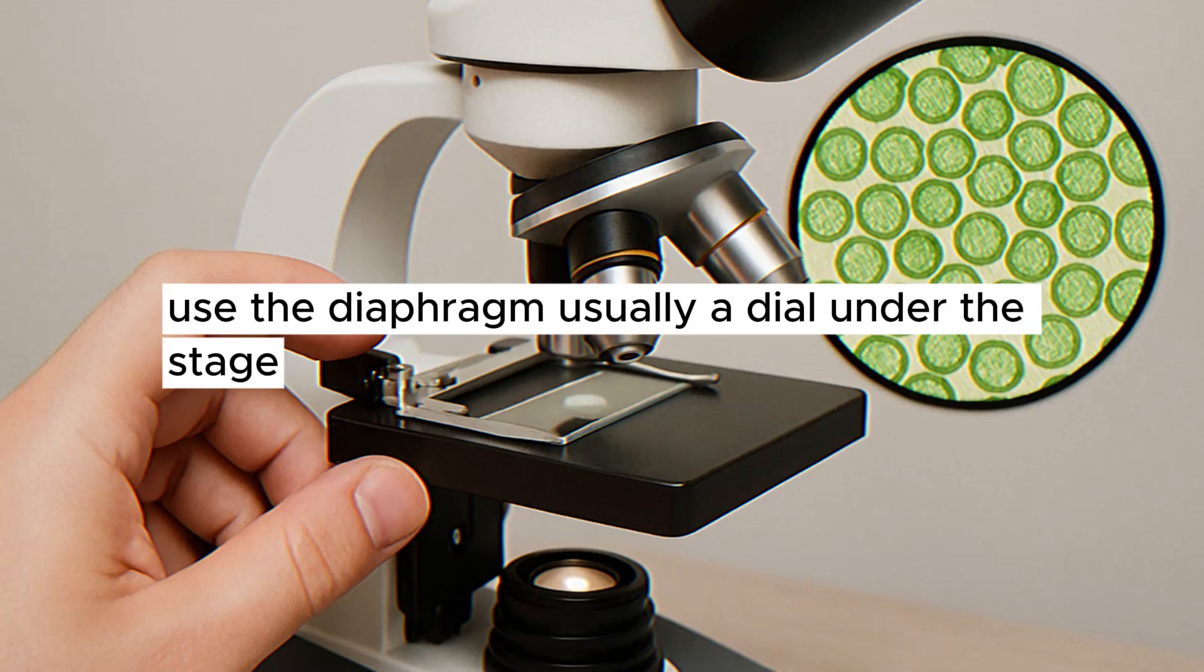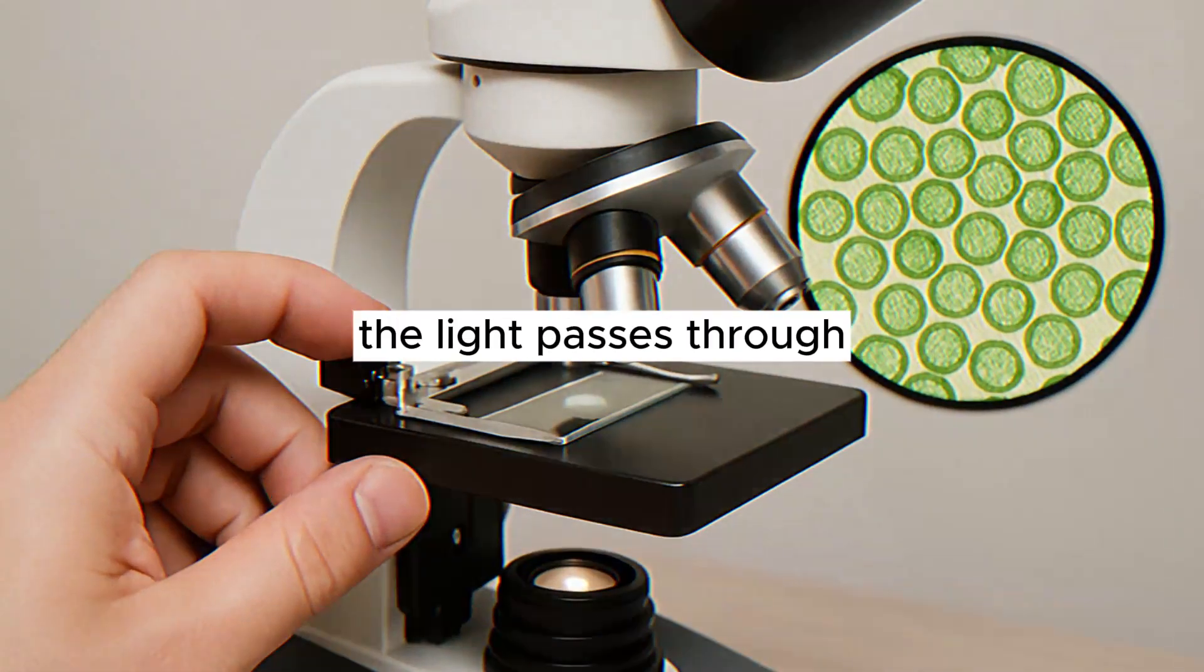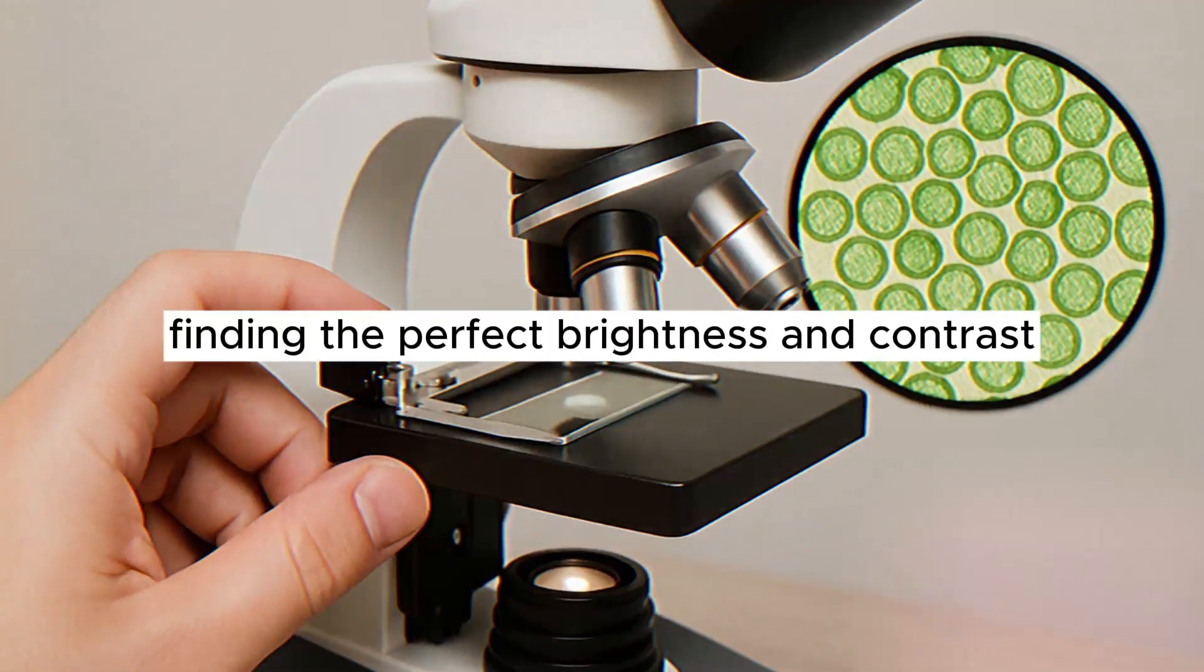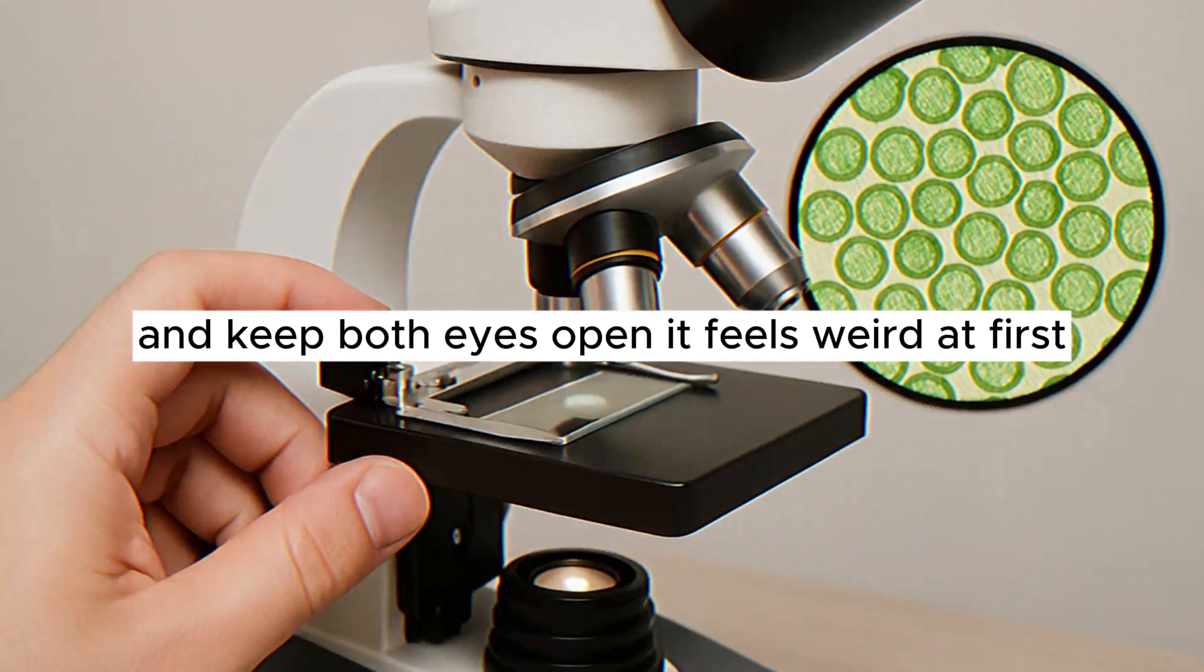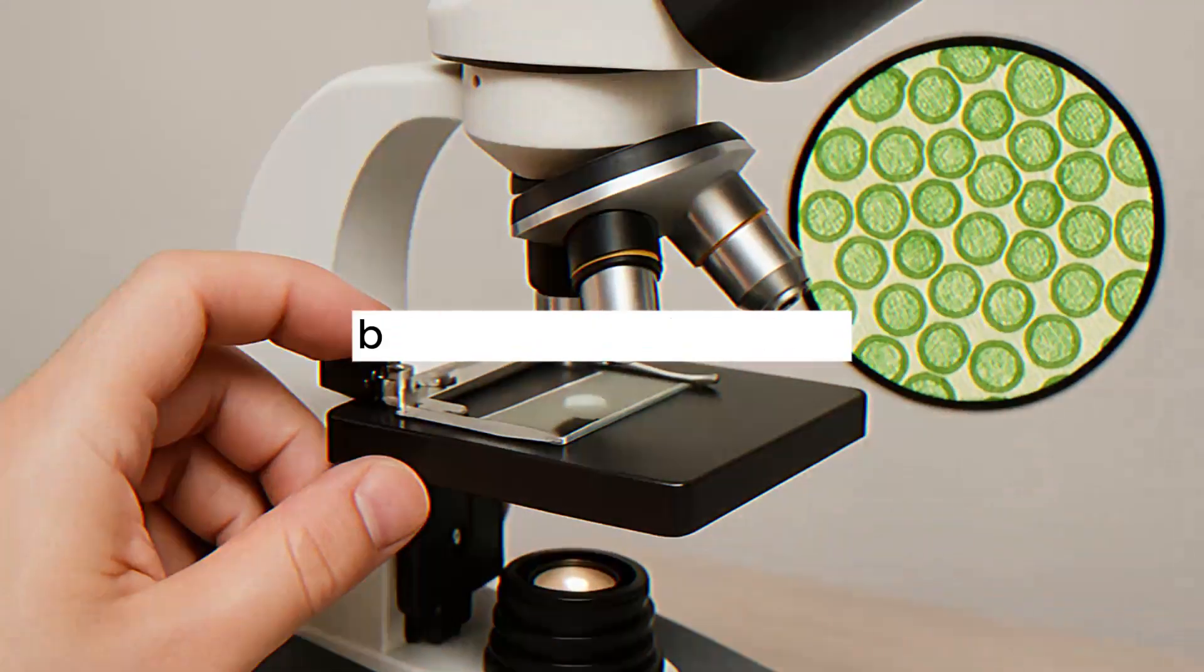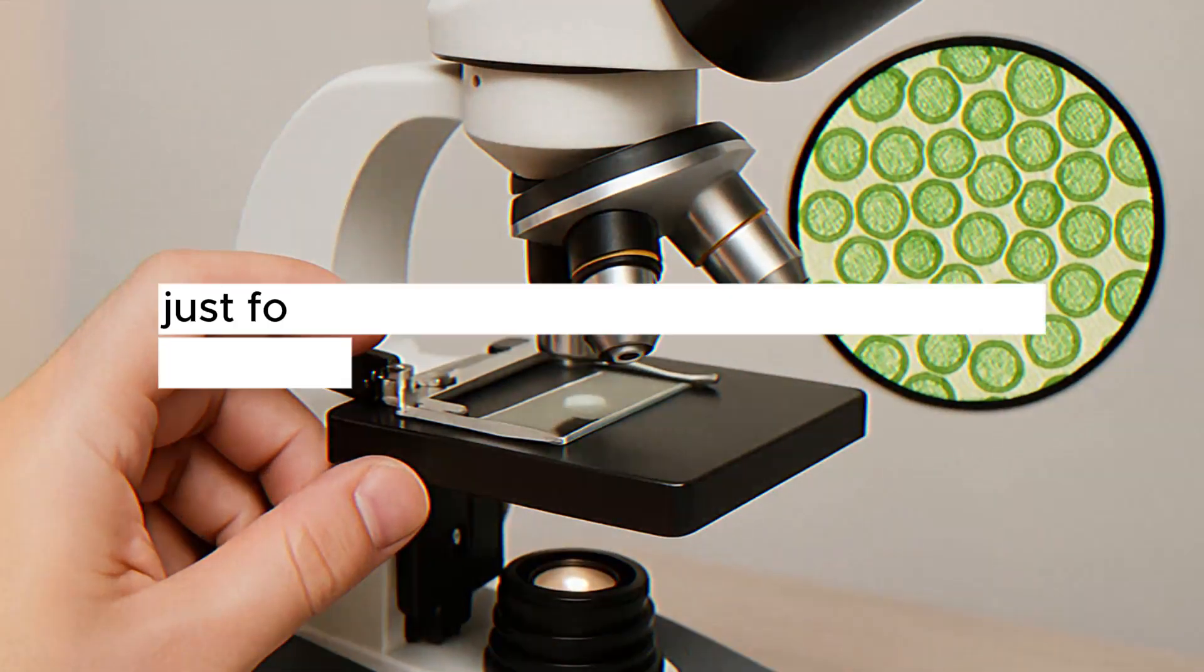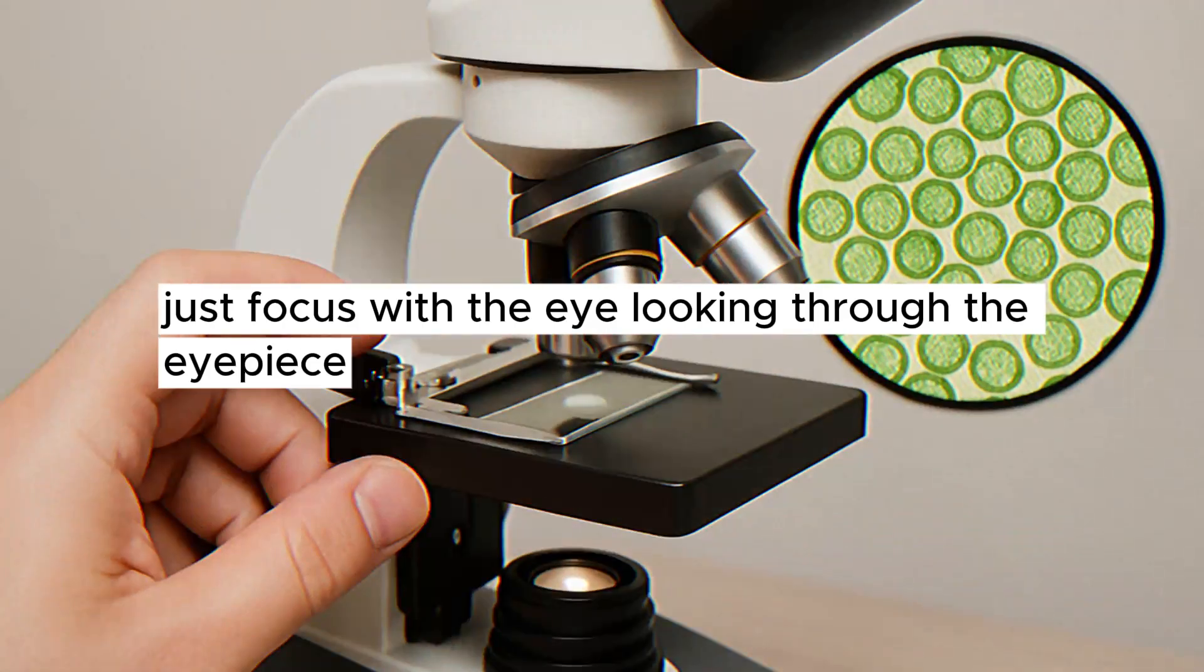Use the diaphragm, usually a dial under the stage, to adjust the size of the opening the light passes through, finding the perfect brightness and contrast for what you're looking at. And keep both eyes open. It feels weird at first, but it reduces eye strain. Just focus with the eye looking through the eyepiece.